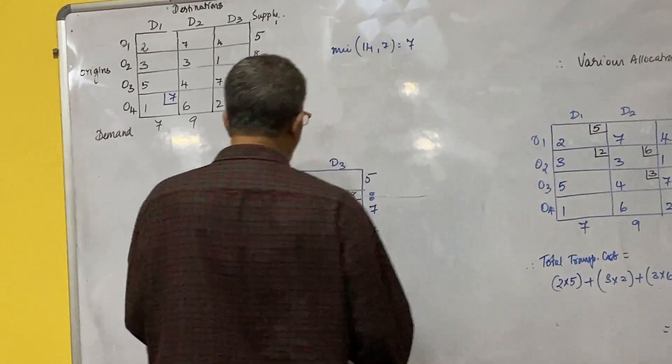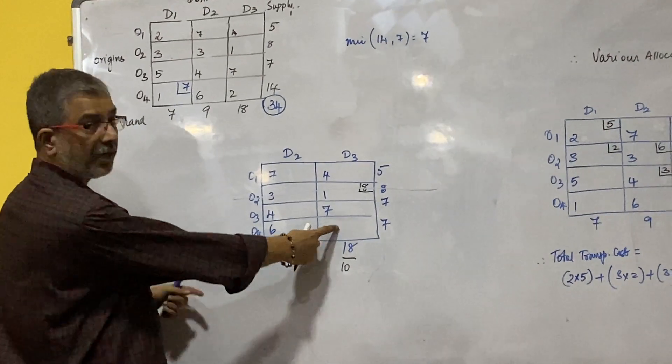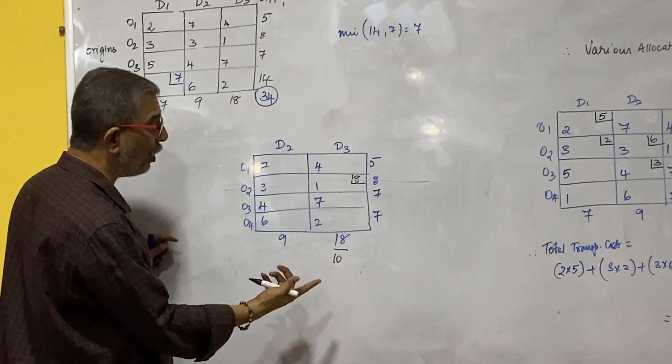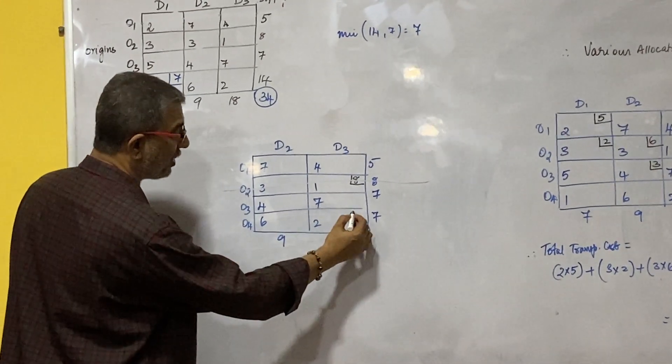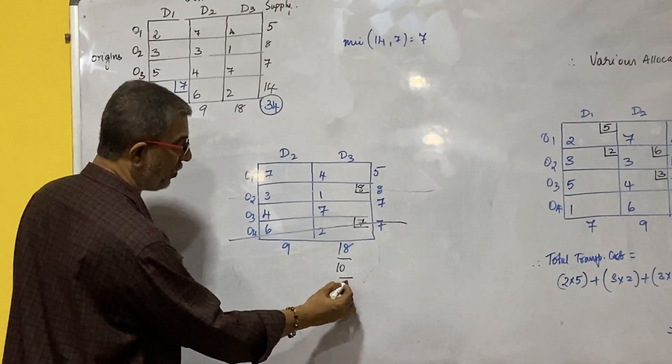Now next, lowest cost. Which is the next lowest cost? We have 2 over here, right? We have 2 over here and accordingly I can allocate 7 and 10. So I enter 7 over here and this row will get deleted and balance will be 3 over here.